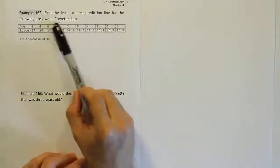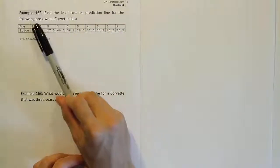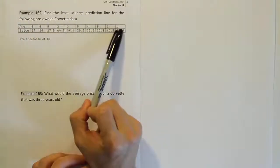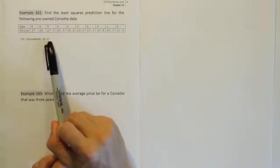Example 162. Find the least squares prediction line for the following pre-owned Corvette data. So we have the age of the Corvette, right?